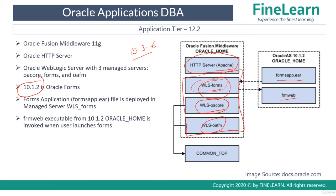Let's look at the request flow. When an end user requests a form, the request comes through the HTTP server to the forms managed server. The forms managed server then goes to the 1012 Oracle Home to execute the frmweb process. For each end user request, an frmweb process is created on the operating system of the application tier to serve that request.